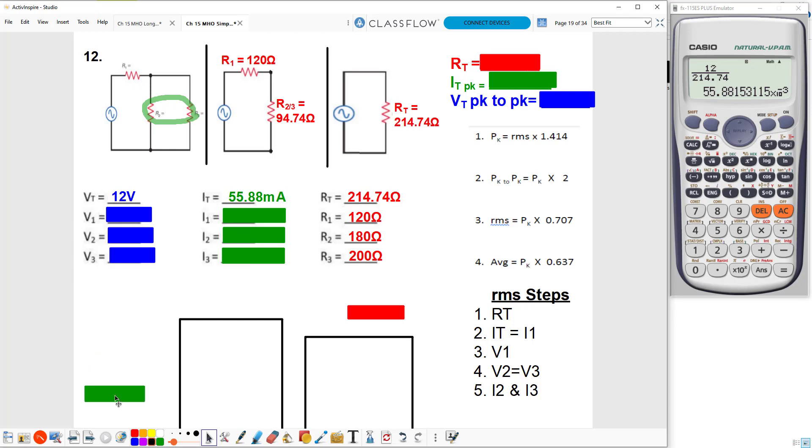Since R1 is on the main branch, I1 will be the same as IT. Showing you that on this step right here. So all the current is going to flow, it's going to split, it's all going to come back together, and it's all got to flow from this point to this point. So however much IT is, that's how much I1 is.